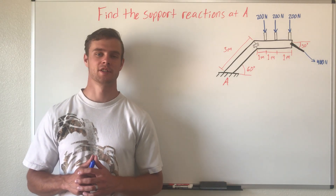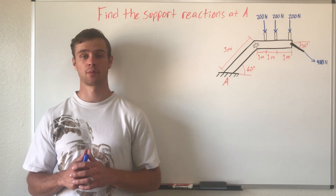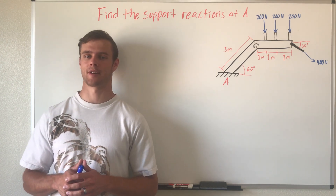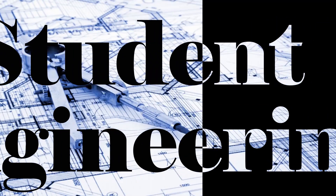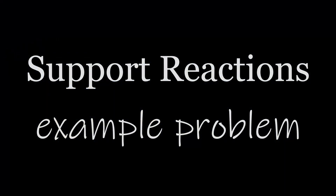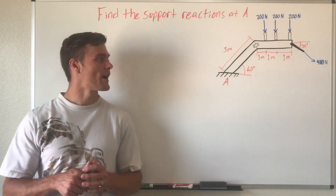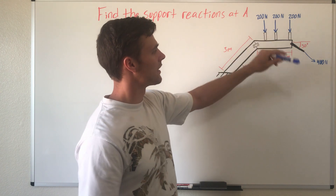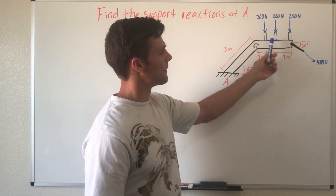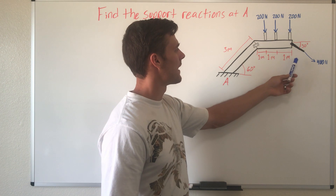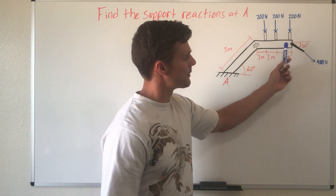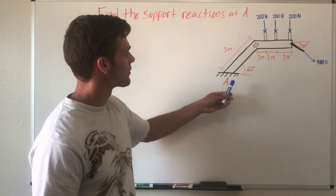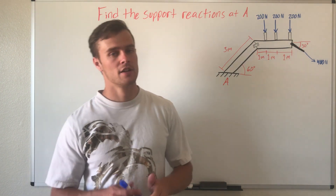What's up guys, my name is Preston Palmer, student engineering. In this video we're going over an example problem on how to solve the reaction forces. What we have here is a beam that's cantilevered out with three forces acting on top - those could be the weight of beams coming in perpendicular - and another rope or cable pointing in that direction with 400 newtons of force. What we need to find are the reaction forces at point A.